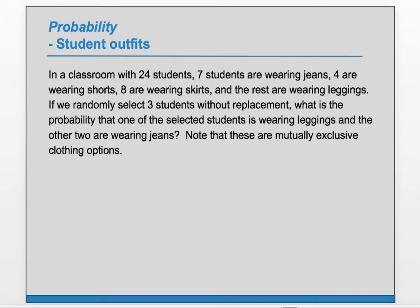In a classroom with 24 students, 7 students are wearing jeans, 4 are wearing shorts, 8 are wearing skirts, and the rest are wearing leggings. If we randomly select 3 students without replacement, what is the probability that one of the selected students is wearing leggings and the other two are wearing jeans?